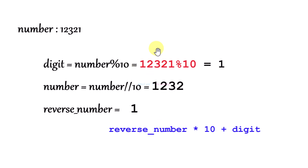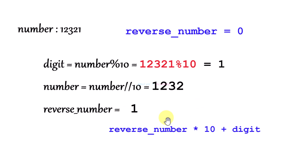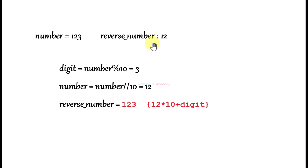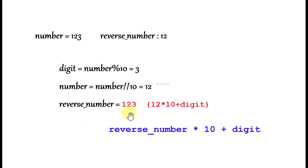Initially, reverse_number is 0. So reverse_number × 10 + digit (which is 1) gives 1. This is the formula to reverse the number. Continuing: number is 123 and reverse_number is 12. We take digit = 123 modulo 10, which gives 3, remove it via division to get 12, then compute reverse_number × 10 + digit = 12 × 10 + 3, giving reverse_number = 123.